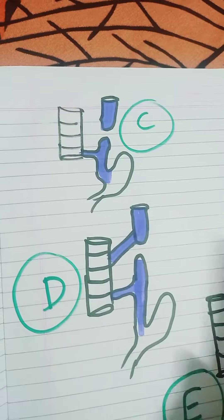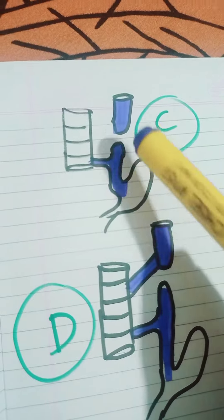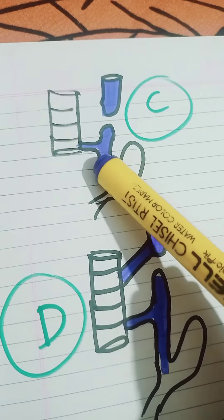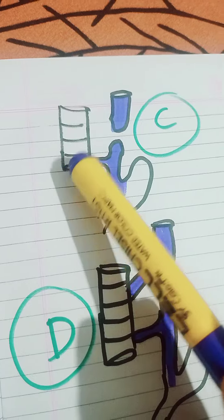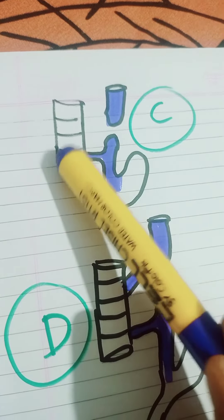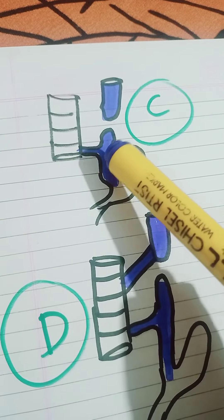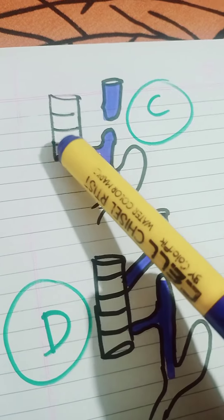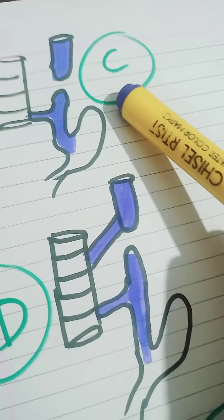Here the proximal end is blind. For the distal end of the esophagus, a connection is made between the trachea and esophagus — that is, the distal end forms a tracheal connection. That is Type C.